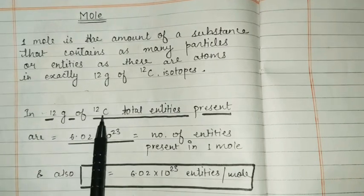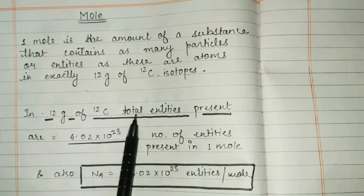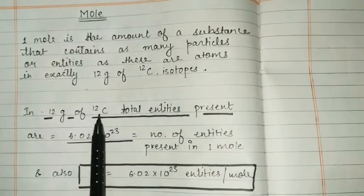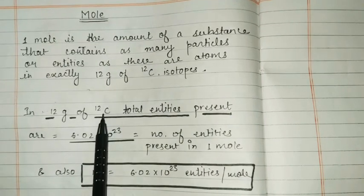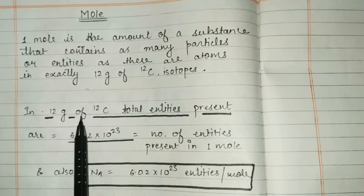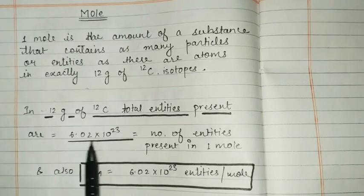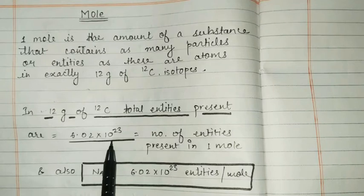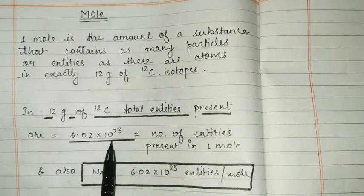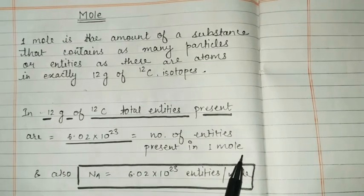In 12 grams of carbon-12, total entities present are - if we take 12 gram entity, how many molecules will be present? 6.02 into 10 to the power 23 molecules will be present. And this quantity is called 1 mole.